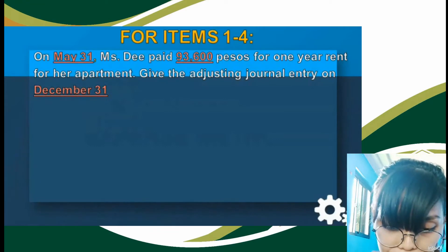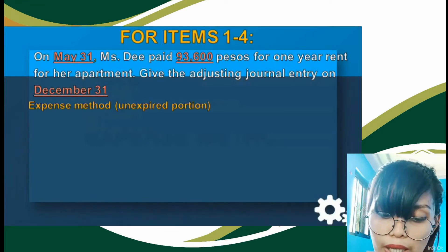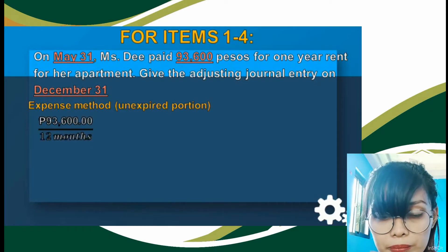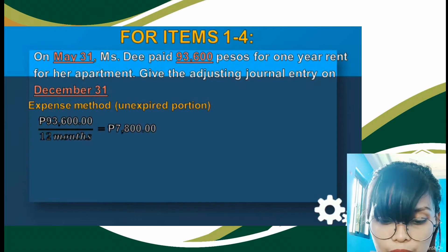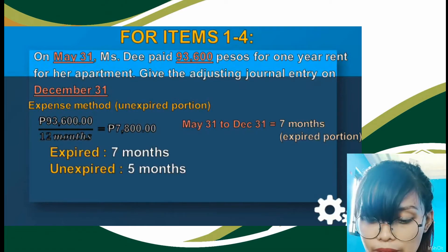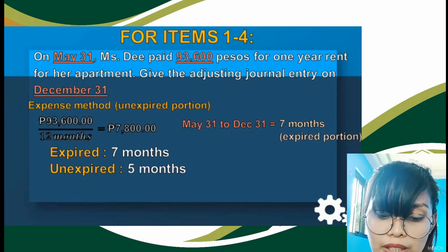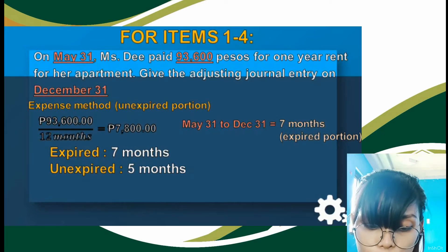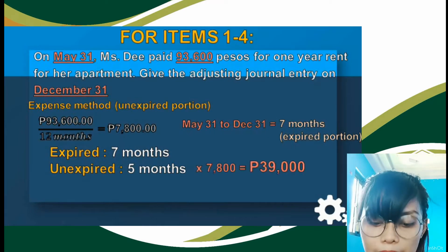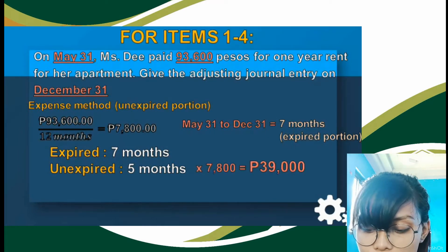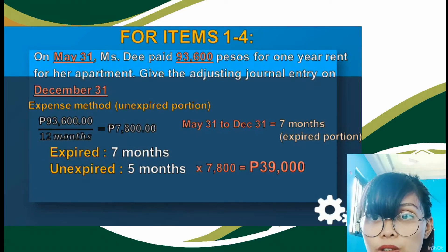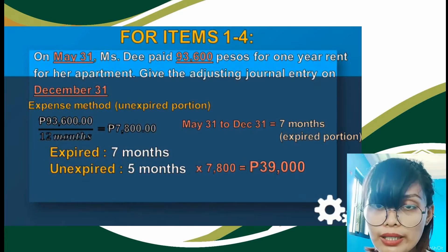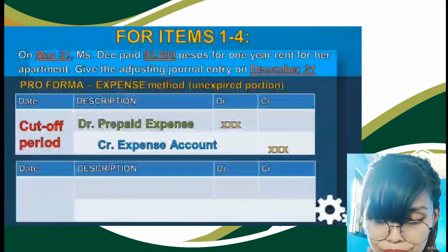Now let's apply the expense method. For the expense method, we get the unexpired portion — the amount not yet used as of the cut-off period. Going back to the computation: P7,800 per month, 7 months expired, 5 months unexpired. Since we're using the expense method, we take the 5 months multiplied by P7,800 and get P39,000. That amount will be used in our adjusting entry.